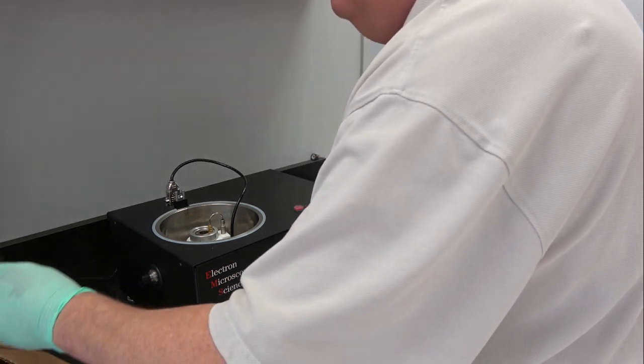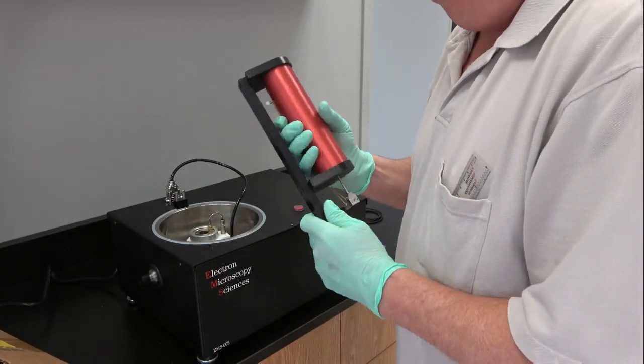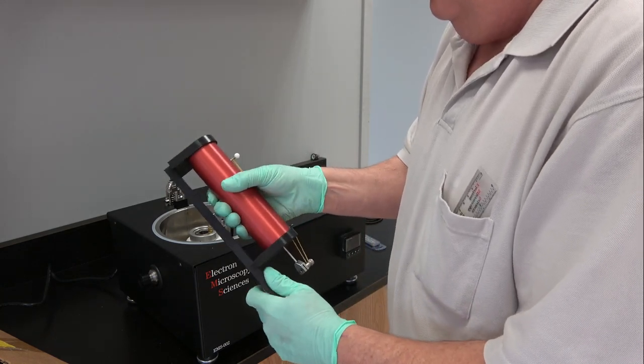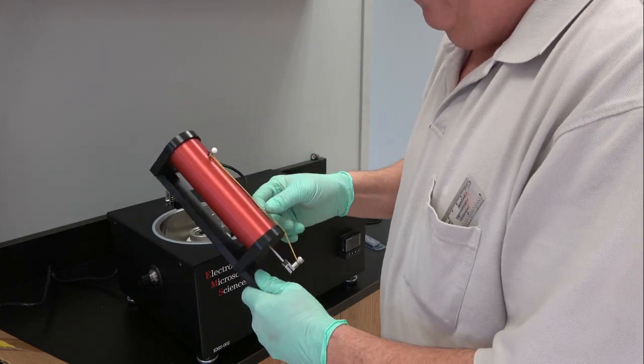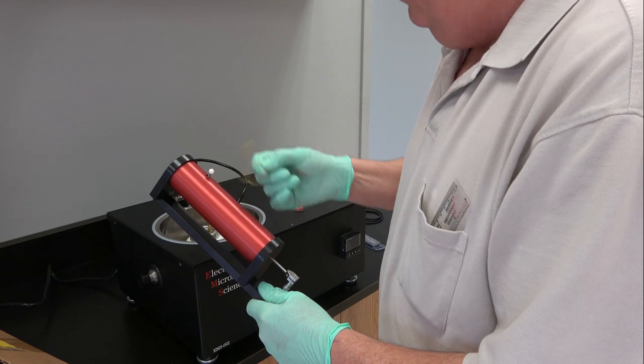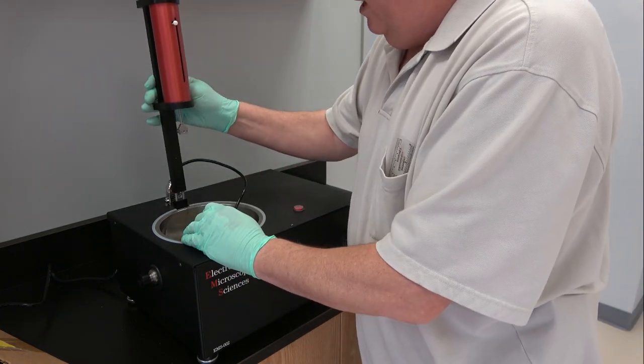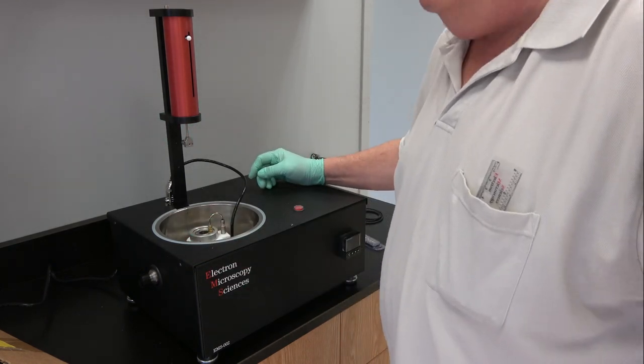What I'll do next is I'll mount the drop mechanism which I call the drop anvil. It is shipped with this part facing backwards just so nothing gets damaged, and that just simply slides down over those two pins.